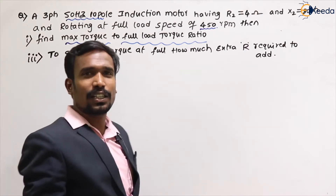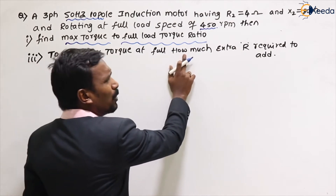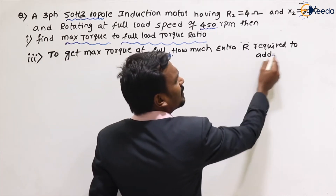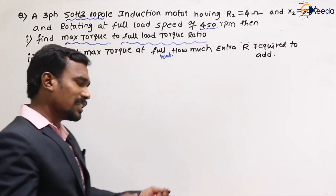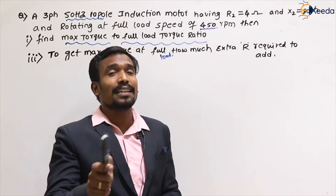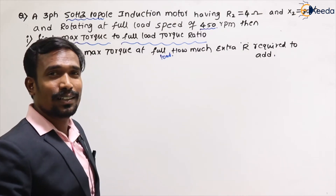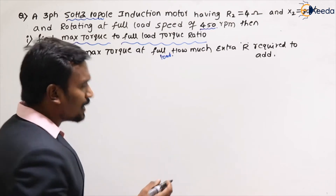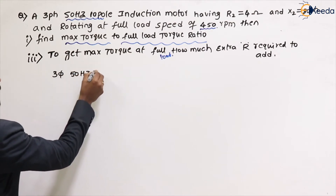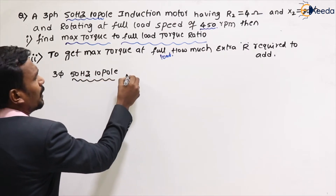They are asking: first, the maximum torque to full load torque ratio; and second, to get maximum torque at full load, how much extra resistance is required to add in the rotor? Let's see the given data. For a three-phase, 50 Hz, 10-pole motor, what is the synchronous speed?